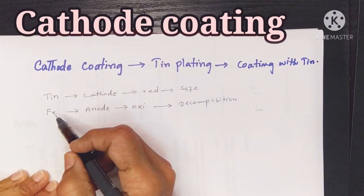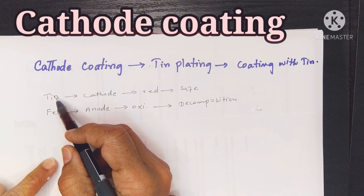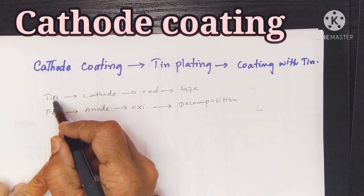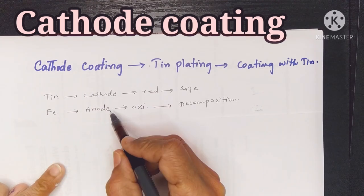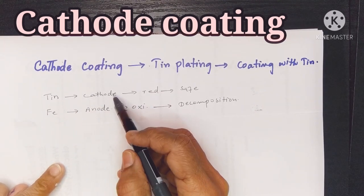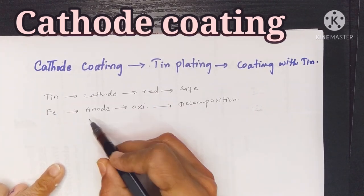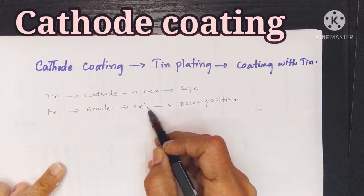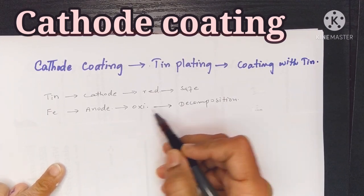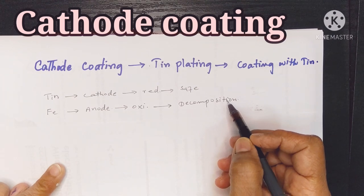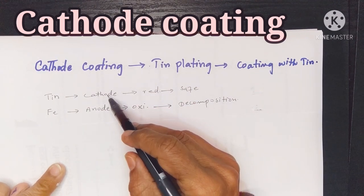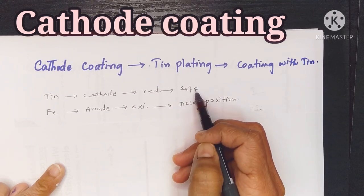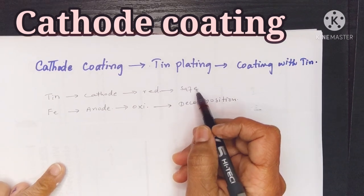For tin plating of iron, iron acts as anode and tin acts as cathode. The iron, being anode, will be oxidized and decomposed. At the cathode, reduction occurs, making it safe so it will not be decomposed.